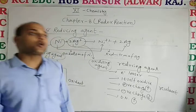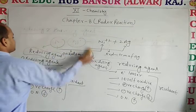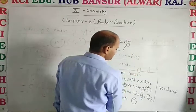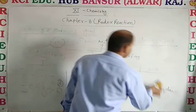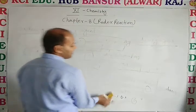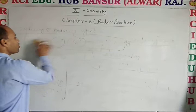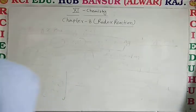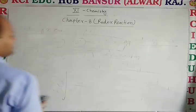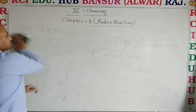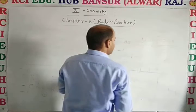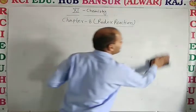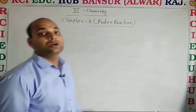Next, our topic is self-oxidation reduction reaction. Those types of reactions in which one species undergoes both oxidation as well as reduction are called self-oxidation reduction reactions, also known as disproportionation reactions.